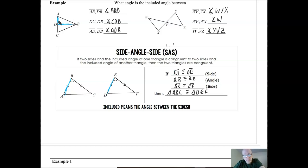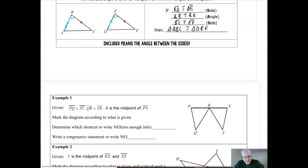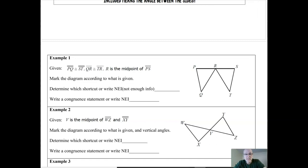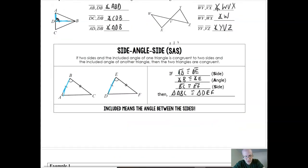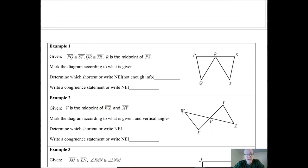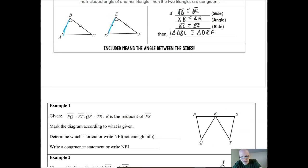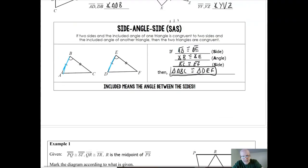There are actually more shortcuts, but today we're just working on these two. Let's look at a couple of examples showing what the problems will look like. You'll be given some information — it could already be shown in a diagram, but in these examples I'll give you information and you'll have to mark it onto the diagram. Then you'll use that information to mark up the diagram so it looks like SSS or SAS. If it's neither, you'll say there's not enough information. After marking and identifying the shortcut, you'll state the congruence statement matching up corresponding vertices.